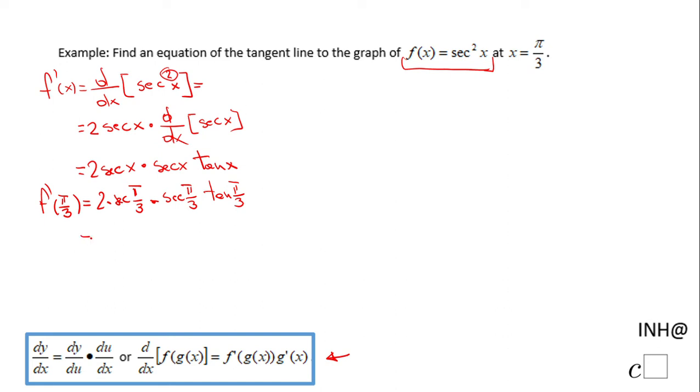So now let's see. We have 2 times secant of pi over 3. Secant is the reciprocal of cosine and cosine of pi over 3 is 1 half, so the reciprocal will be just 2 times 2. Again, the second secant.